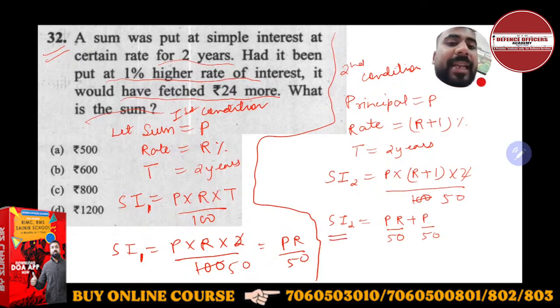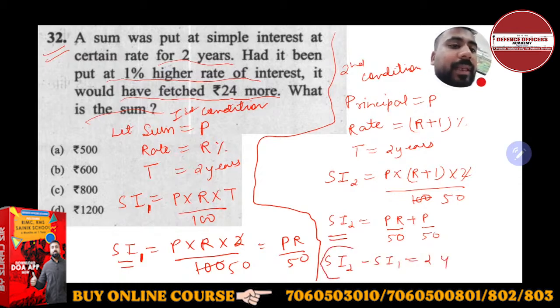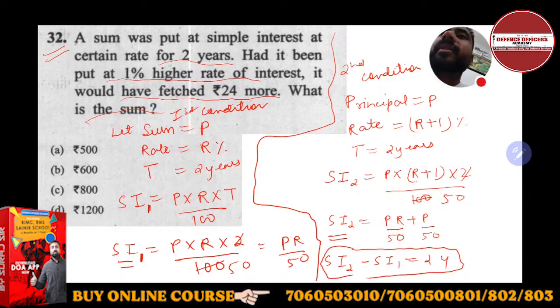Now what is given? This simple interest is 24 rupees more than the first one. So if you will do SI2 - SI1, you will get 24 rupees. This is the important thing. If you will subtract it, you will get 24 rupees.